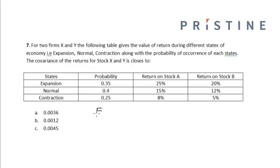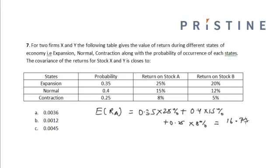First we have to find the expected return on stock A, and that will be equal to 0.35 into 25% plus 0.4 into 15% plus 0.25 into 8%. We have multiplied the return on stock A in each state with the probability of the happening of that state. So it will be equal to 16.75%.